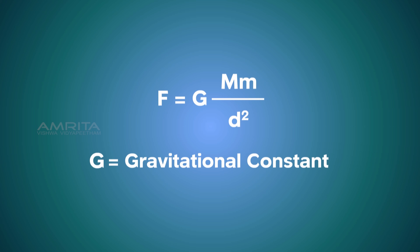The value of G is equal to 6.673 into 10 to the power of minus 11 newton meter square per kg square.